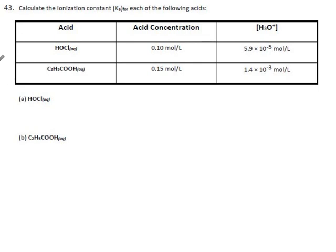Okay, same thing except now they're being all lovely and giving us the H3O+ so we don't have to do that extra step. For HOCl, hypochlorous acid, the K is [H3O+] 5.9 times 10 to the minus 5, remember to square it, divided by the original acid which was 0.1. The acid constant for this apparently is 3.5 times 10 to the minus 8.